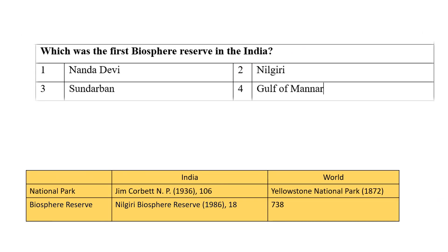Question fourteen: Which was the first biosphere reserve in India? The first national park in India was Jim Corbett National Park, established in 1936, and there are currently 106 national parks. The first biosphere reserve in India is the Nilgiri Biosphere Reserve, established in 1986. Currently there are 18 biosphere reserves in India. The Yellowstone National Park was the first national park globally, established in 1872. So the right answer is Nilgiri Biosphere Reserve.